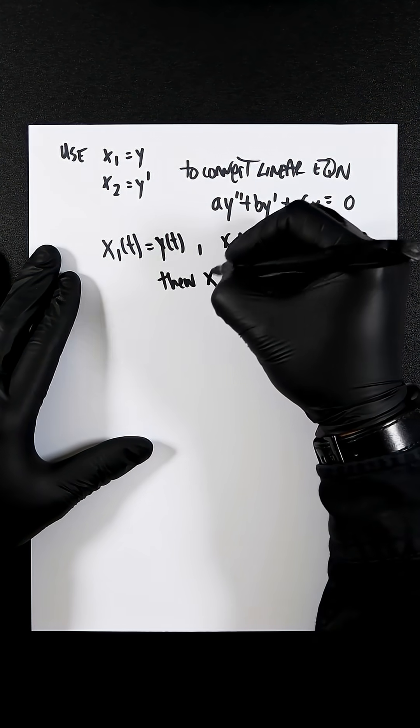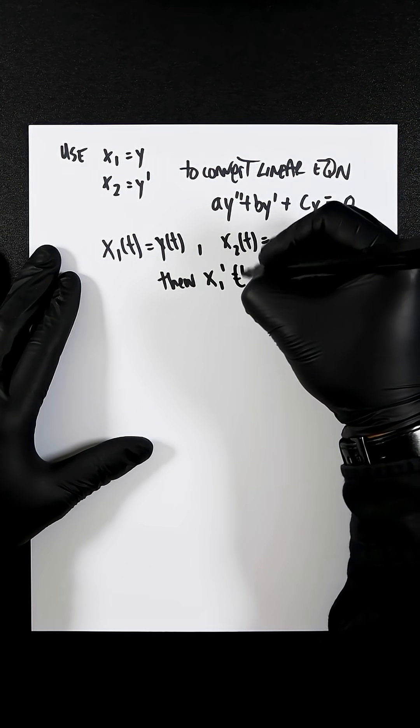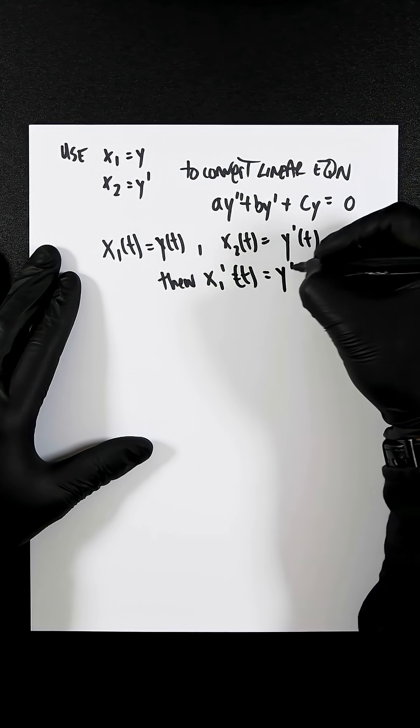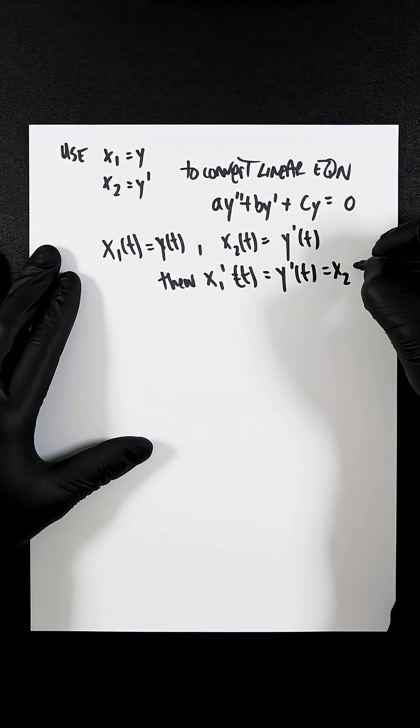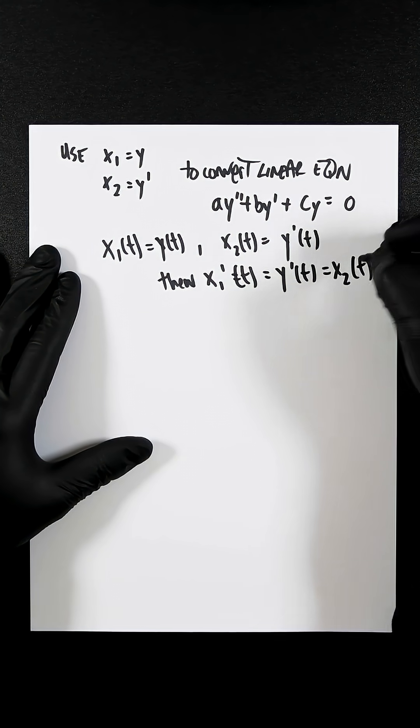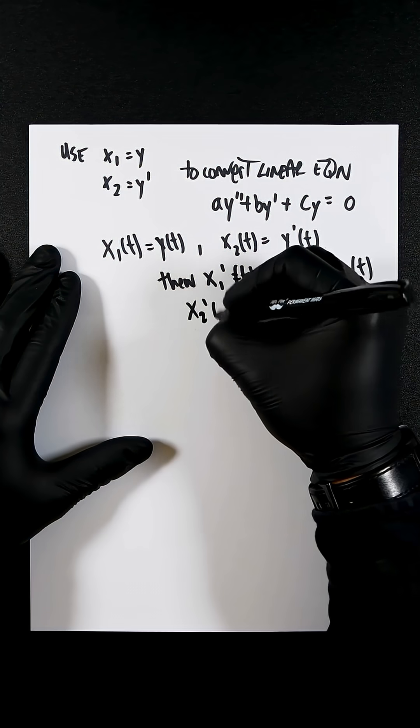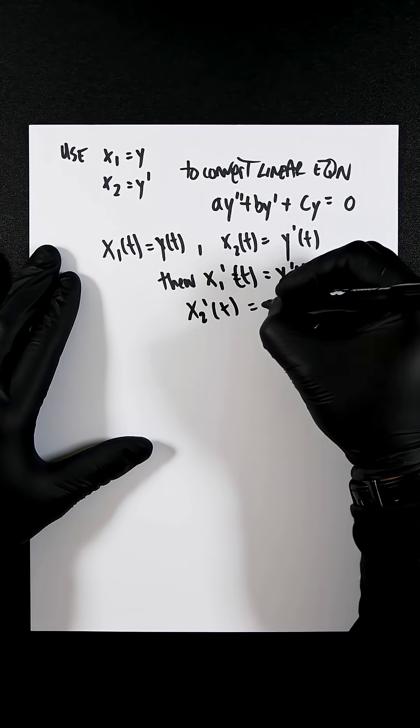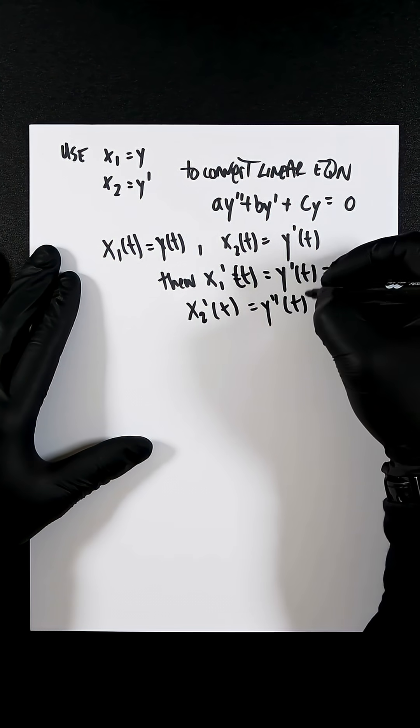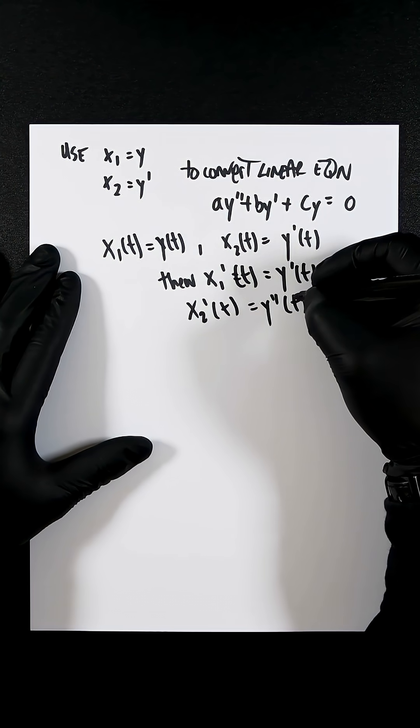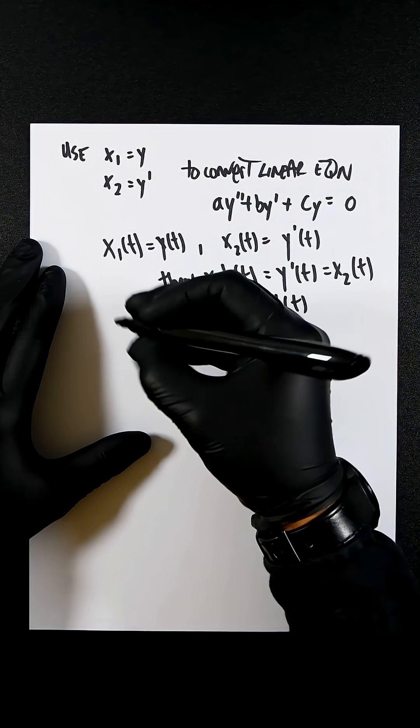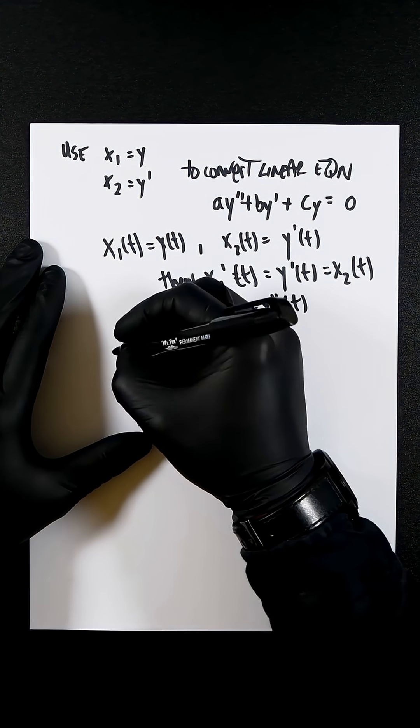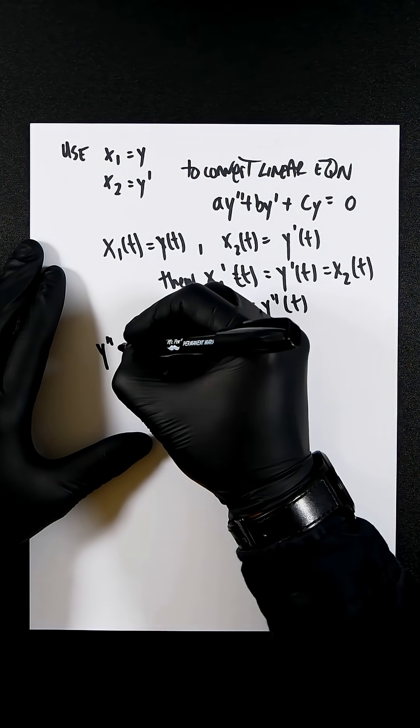Then x1t would be yt, which is the same as x2t. Therefore the differential of x2t is the same as the double derivative of y. So let's solve this for y dash dash. So let's rearrange basically.